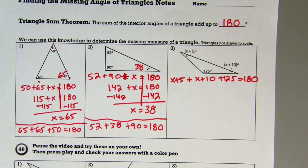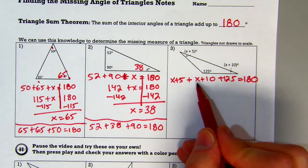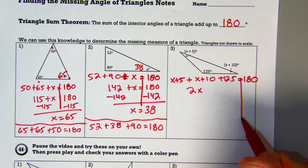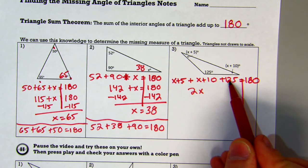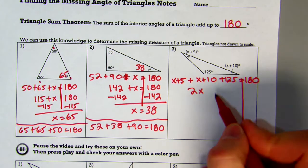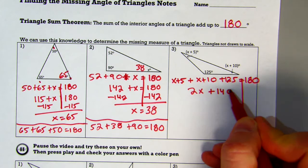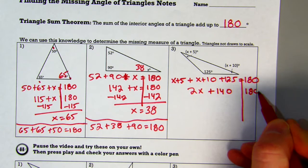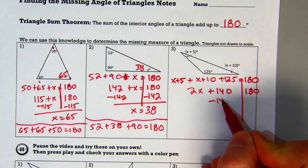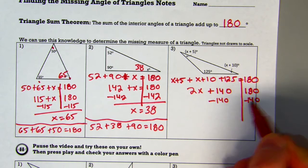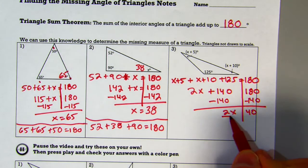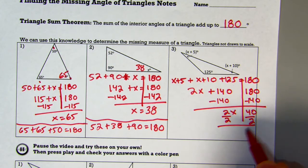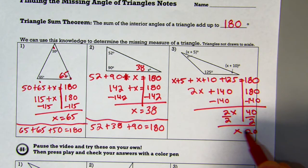First thing I'm going to do is combine my like terms. x and x gives me 2x. Combine my other like terms: 5, 10, and 125 give me 140 together. Bring down my 180, subtract by 140, and I get 2x equals 40. Divide by 2, and x equals 20.